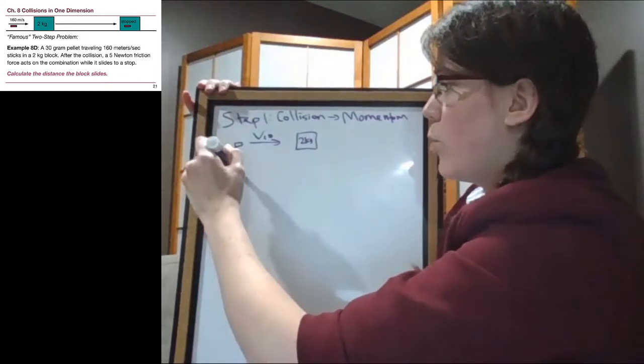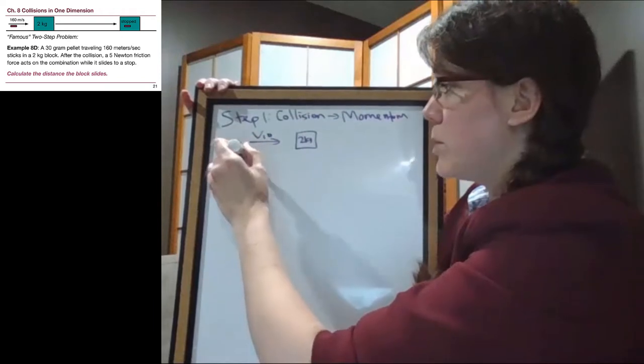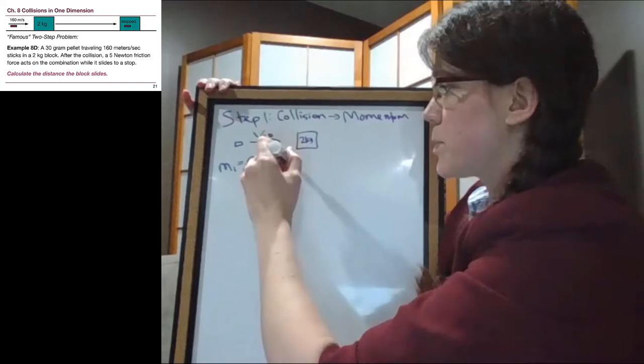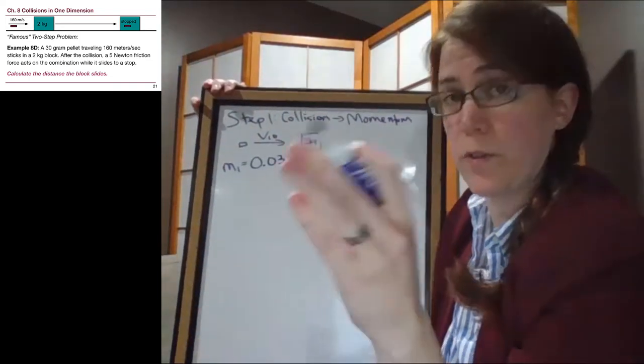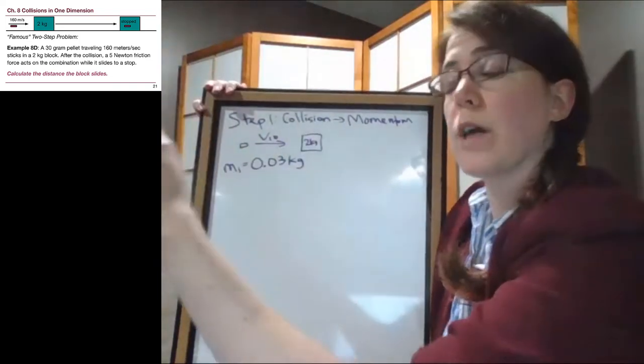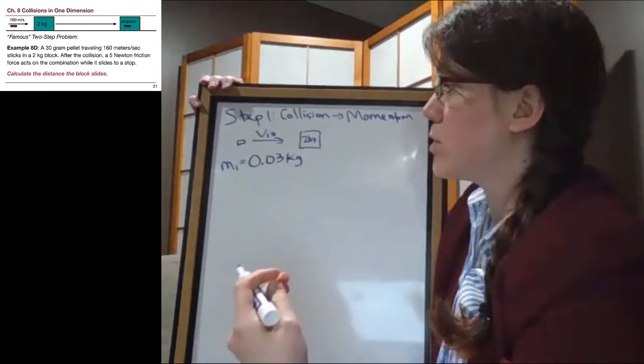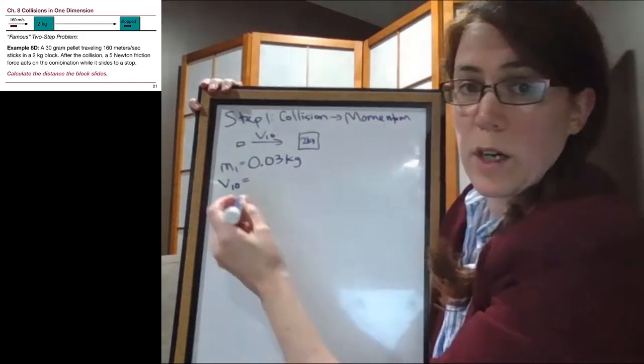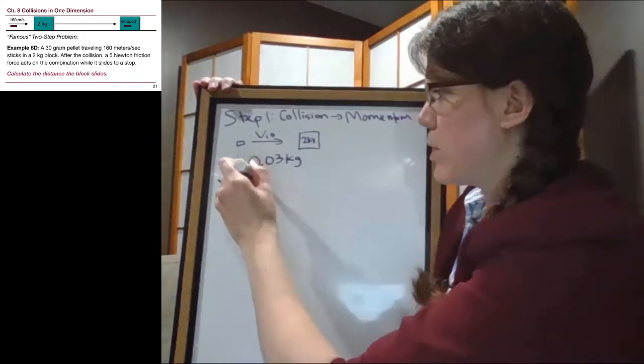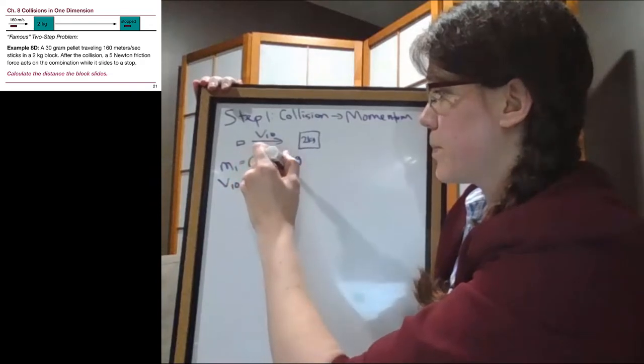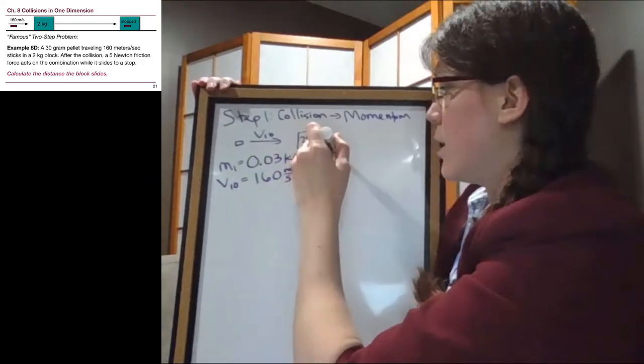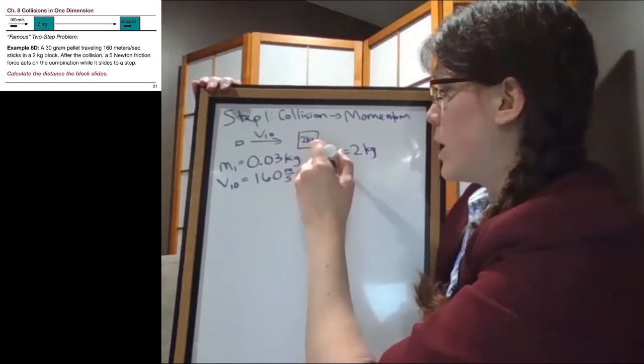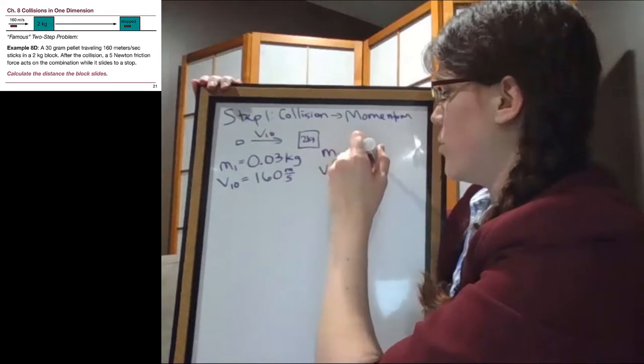Where m1 is 30 grams, so that's 0.03 kilograms - you can double check for yourself if you need to do the full unit conversion, 30 grams divided by 1000 grams per kilogram. That initial velocity of the pellet is 160 meters per second.